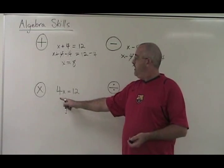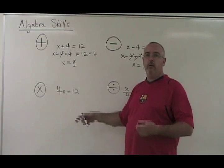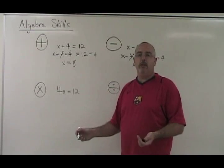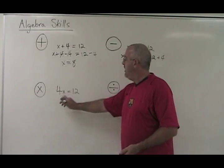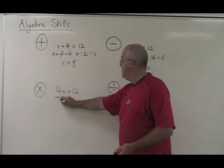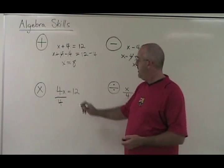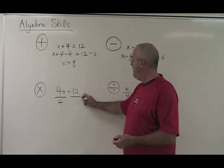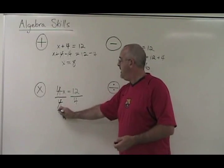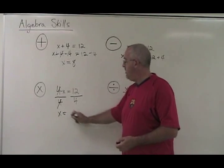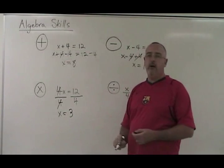Multiplication. 4 times X equals 12. Our X is being multiplied by a 4. We want to do the opposite so we can get rid of it, so we divide by 4, because division is the opposite of multiplication. If we're going to divide the left side of the equation by 4, we must divide the right side by 4. The 4s cancel, our X is isolated, and 12 divided by 4 is 3. We have our answer.